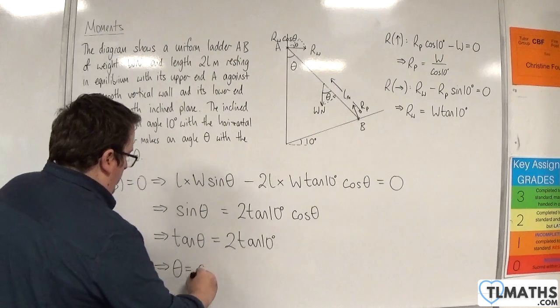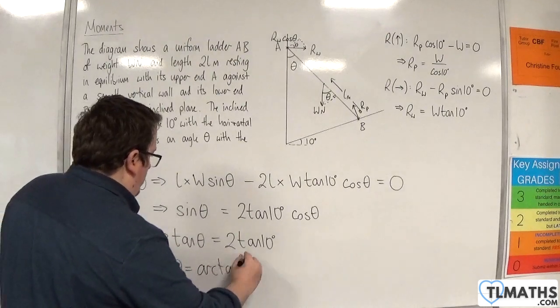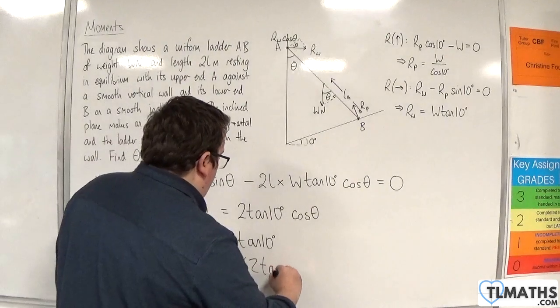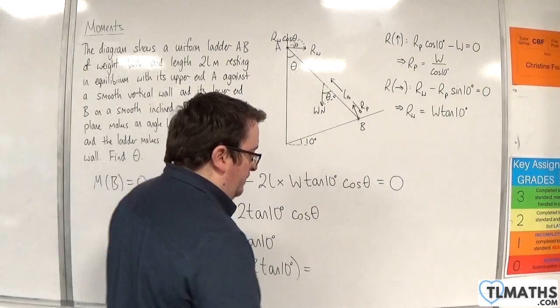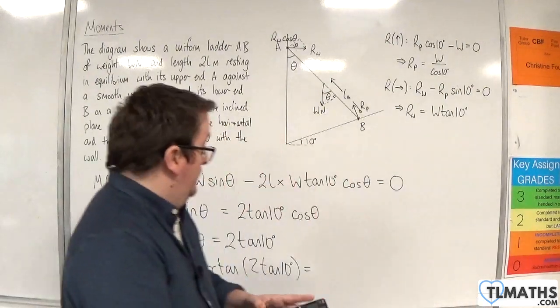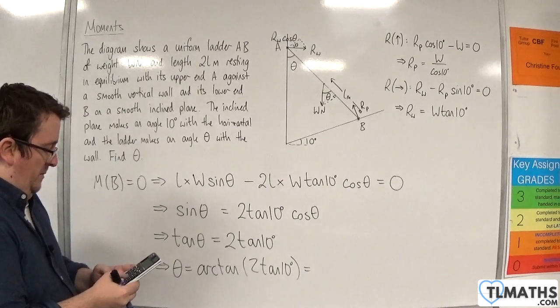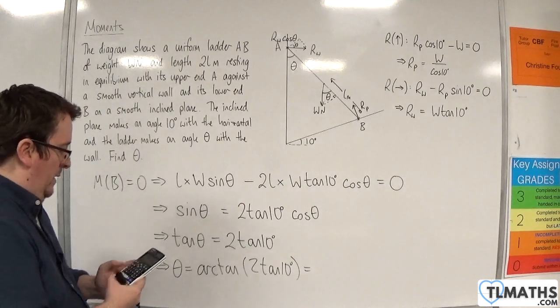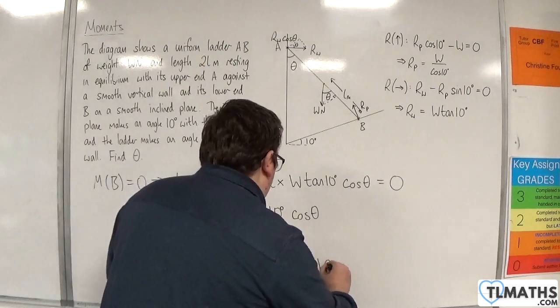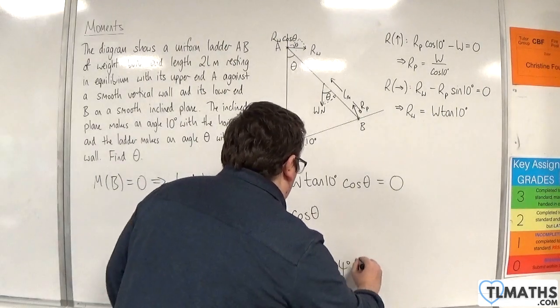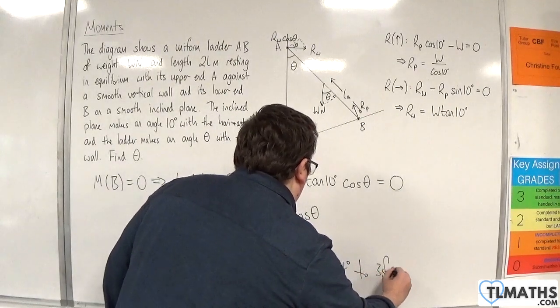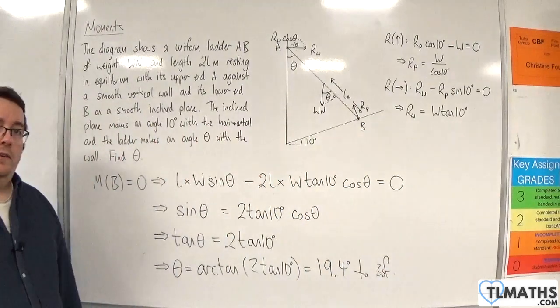So, theta is arctan of 2 tan of 10 degrees. Inverse tan of 2 times tan of 10 degrees, and we get 19.4 degrees to 3 significant figures.